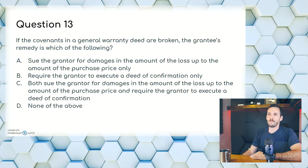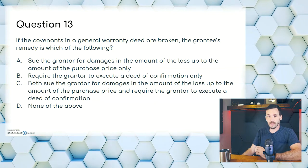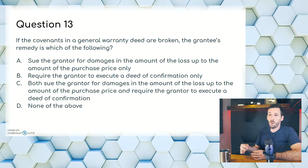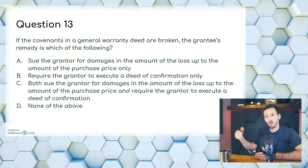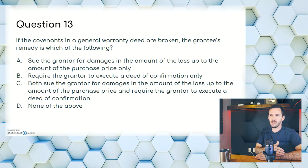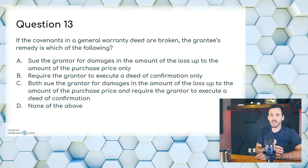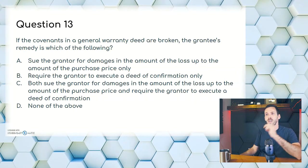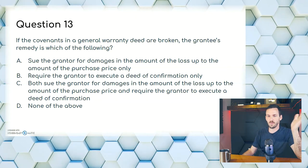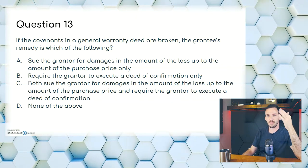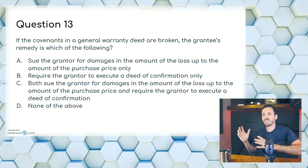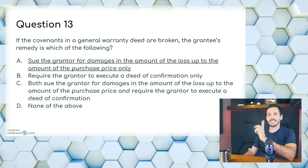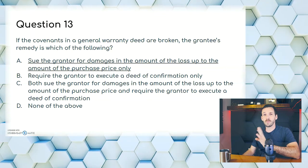Question thirteen: if the covenants in a general warranty deed are broken, the grantee's remedy is which of the following? A, sue the grantor for damages up to the amount of the purchase price; B, require the grantor to execute a deed of confirmation only; C, both sue and require a deed of confirmation; or D, none of the above. If the grantor breaks their end of the bargain, sue them. Usually your firm will have a legal team that has your back on stuff like this. The answer is A — though really, this is the buyer's legal battle, not the agent's.